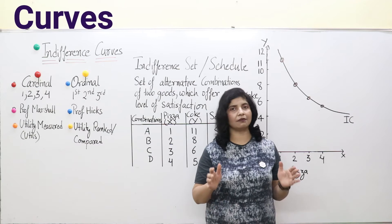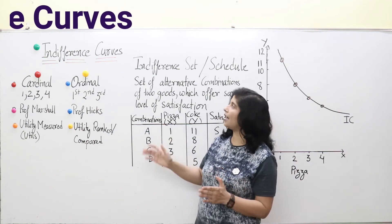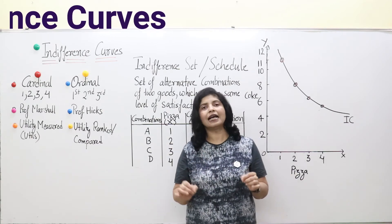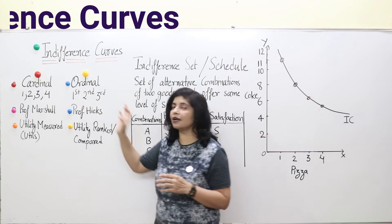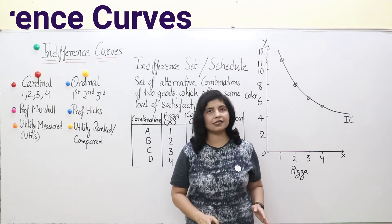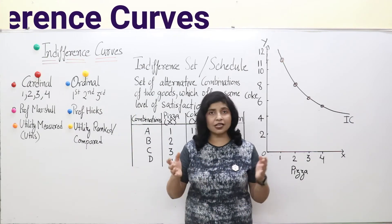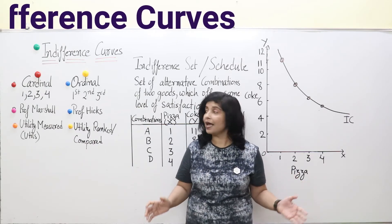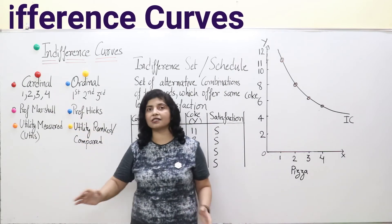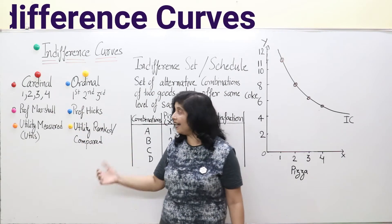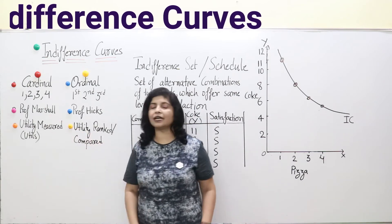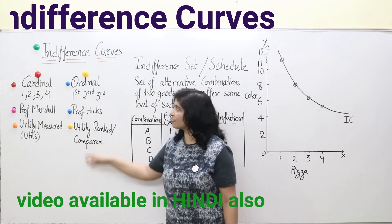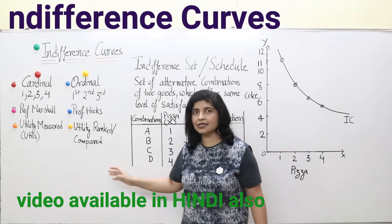Professor Hicks held that utility cannot be measured in terms of mathematical units, and that is what is given by indifference curve analysis. There are basically two approaches to measuring utility: the cardinal approach and the ordinal approach. We have already discussed the cardinal approach. Utility is the satisfaction derived from consumption of any commodity. Professor Marshall, as discussed in consumer equilibrium, measured utility in mathematical units called utils.